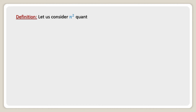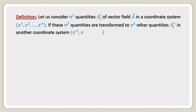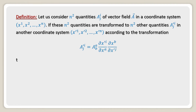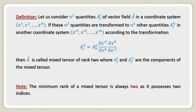Definition. Let us consider n-squared quantities a upper suffix i lower suffix j of a vector field in a coordinate system x1, x2, up to xn. If these n-squared quantities are transformed to n-squared other quantities a prime upper suffix i lower suffix j in another coordinate system x1 prime, x2 prime, up to xn prime, according to the transformation law a prime upper suffix i lower suffix j equals the partial derivative of x^a over del x prime^i multiplied by del x^b over del x prime^j, then a is called a mixed tensor of rank 2, where a upper suffix i lower suffix j and a prime upper suffix i lower suffix j are the components of the mixed tensor.